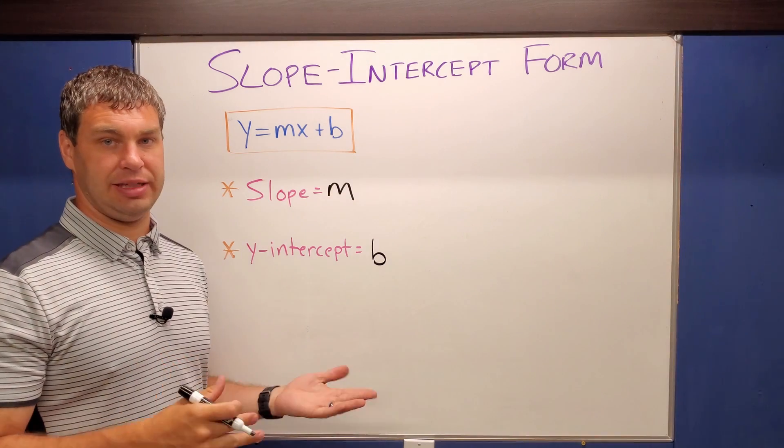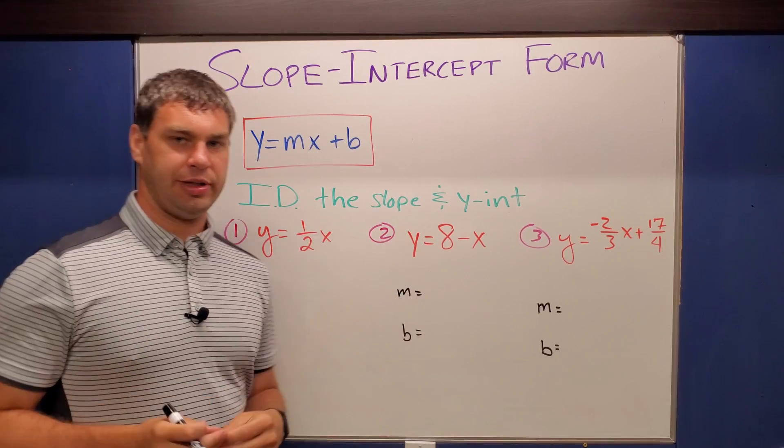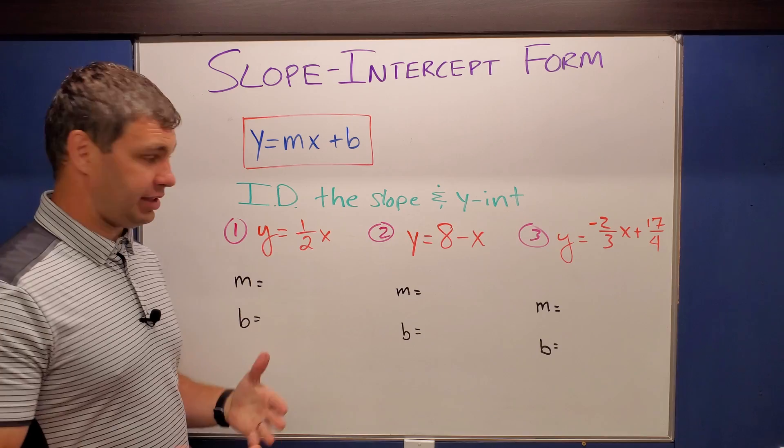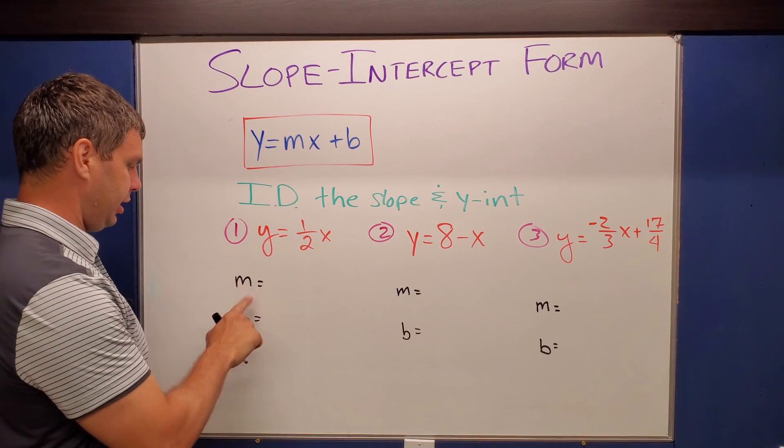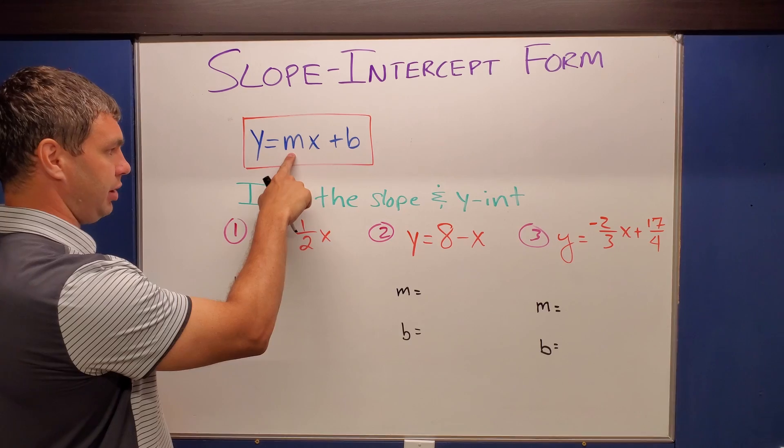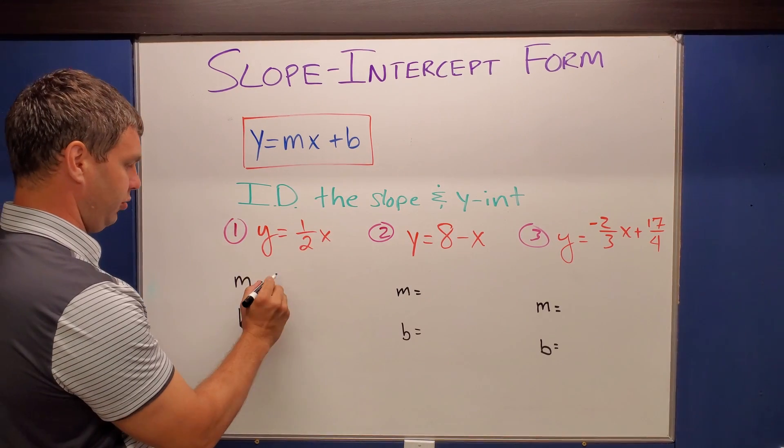So from this we can do lots of different things. Let's check out a couple. The first thing we can do is identify what the slope and the y-intercept are, given some different equations. This first one, the slope remember comes right before our x value, and so that's going to be one-half.